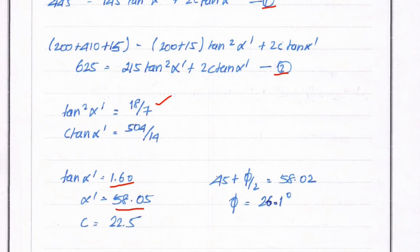Substituting the alpha value back into one of the equations, we get c equals 22.5 kPa. From the alpha value, we can calculate phi using the relation: alpha equals 45 plus phi divided by 2, which gives 58.05 equals 45 plus phi over 2. Solving, phi equals 26.1 degrees.